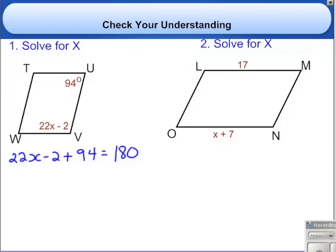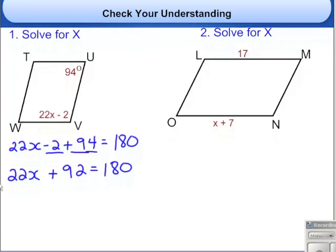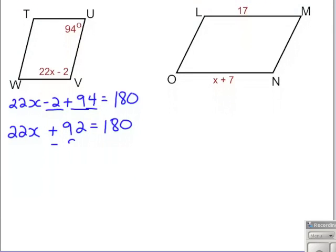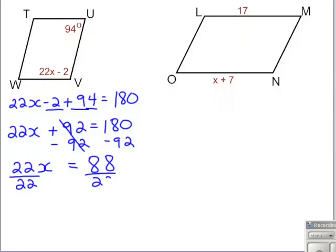Let's solve for X. Combining our like terms, negative 2 plus 94. Alright, let me bring down the 22X. Negative 2 plus 94 is 92. Bring down the 180. So we're trying to isolate our X here. Let's subtract 92 from both sides. That gives us 22X equals 180 minus 92 is 88. Now we need to divide both sides by 22 to isolate the variable. 22 divided by 22 is 1. X is equal to 4.